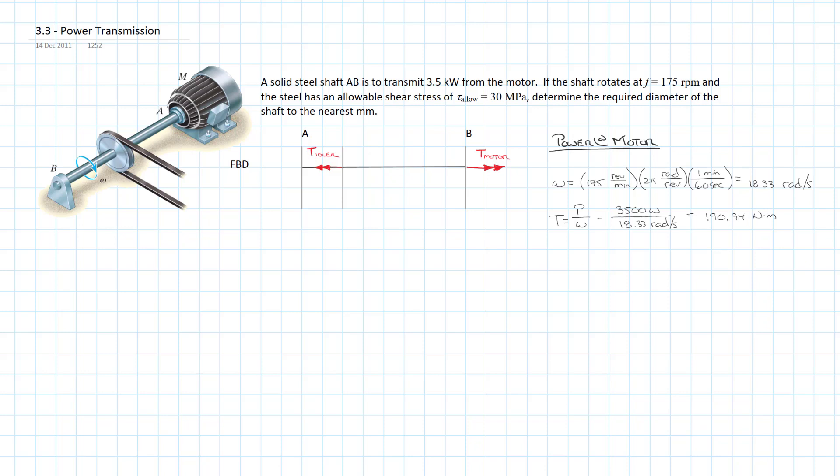So that allows us to figure out what the torque is. Now, quite frankly, we're right back into our comfort zone, which is mechanics of materials. We can size this shaft to restrict the allowable stress to 30 megapascals. It was 190.94 newton meters, and this is the same.